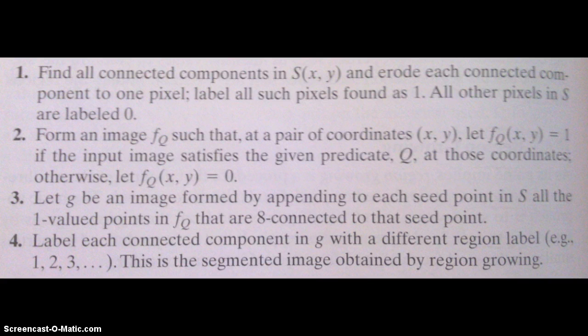Step three is creating a new image G, formed by appending each seed point in the seed array to all the one-valued points. In this particular example, they use an 8-connect mask that determines the neighboring pixels around the seed points. So step three is basically clustering all these. When you go through the image and you have ones and zeros, you're clustering all the ones together. That's basically the growing part of the algorithm.